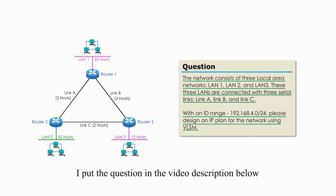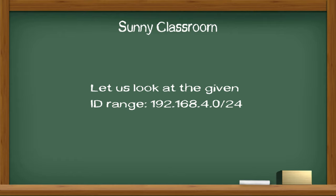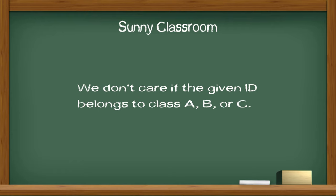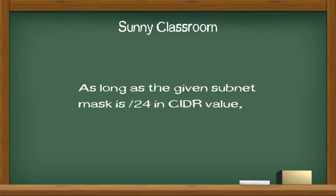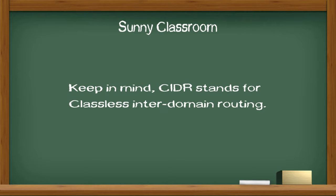I put the question in the video description below. You can go back to the question anytime during our discussion. Let's look at the given IP range, 192.168.4.0/24. We don't care if a given IP belongs to class A, B, or C. As long as the given subnet mask is slash 24 in CIDR value, we know we can use this Sonny subnetting table. Keep in mind, CIDR stands for Classless Interdomain Routing.